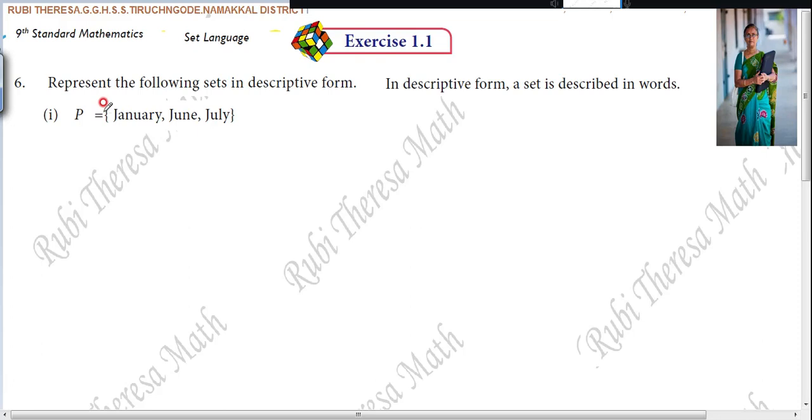Here you see P equals January, June, July. This is English month, name of English month. But you see the first letter: J, J, J.